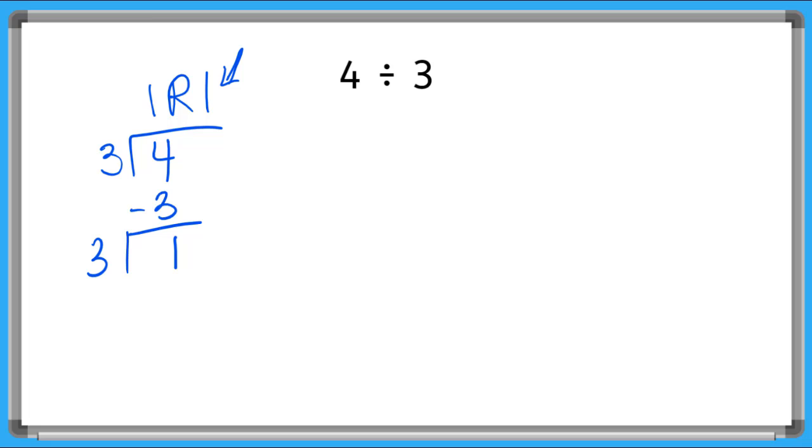But in this lesson we're learning how to write our remainder as a fraction. So what I do to write my remainder of one as a fraction is I take my remainder, a one, I put it as the numerator of my fraction and then I take my divisor which is this number three over here and three becomes my denominator.